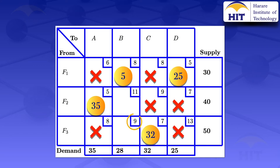The next least cost is a nine. For this cell, the supply is 50 but we have already allocated 32, so the remaining supply is 50 minus 32 = 18. The demand is 28. We take the minimum of 18 and 28, giving us 18, so we allocate 18 units in this cell.